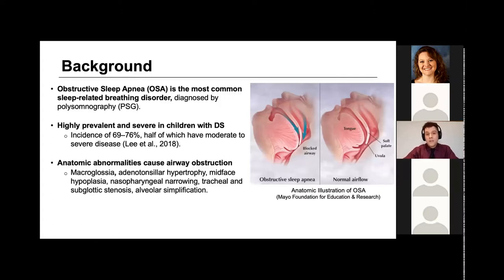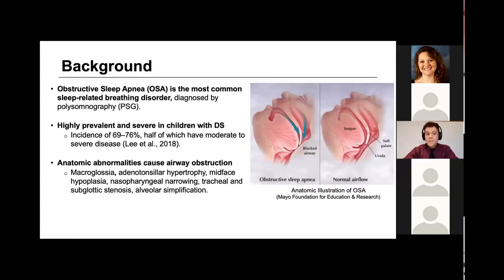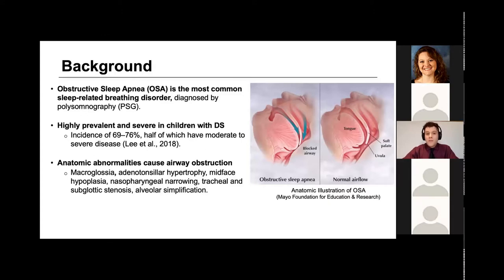Anatomic abnormalities present in children with Down Syndrome cause an airway obstruction that predisposes them for obstructive sleep apnea. These abnormalities include an enlarged tongue, enlarged tonsils, shortened mid-face, narrowing in the nasopharynx, trachea, and subglottic regions, as well as abnormal growth patterns at the level of the alveoli. So these children have risk factors for OSA from the nose all the way to the most terminal and smallest parts of their airway.